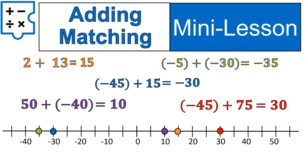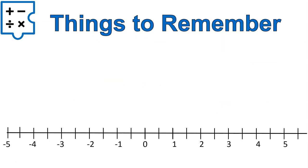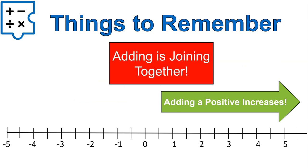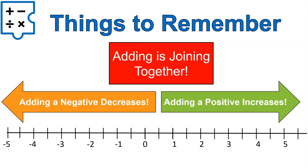That is how we add on a number line. Remember, adding is just joining together. So if we're joining together a positive number and a positive number, we're getting an even larger positive. If you're joining a negative and a negative, you get a negative that's farther to the left. When we're joining a positive and a negative, you kind of put them together and see where it lands — if it's more positives, you'll get a positive answer; if it's more negatives, you'll get a negative answer. A couple of things to remember: adding is just joining together, adding a positive increases, adding a negative decreases.